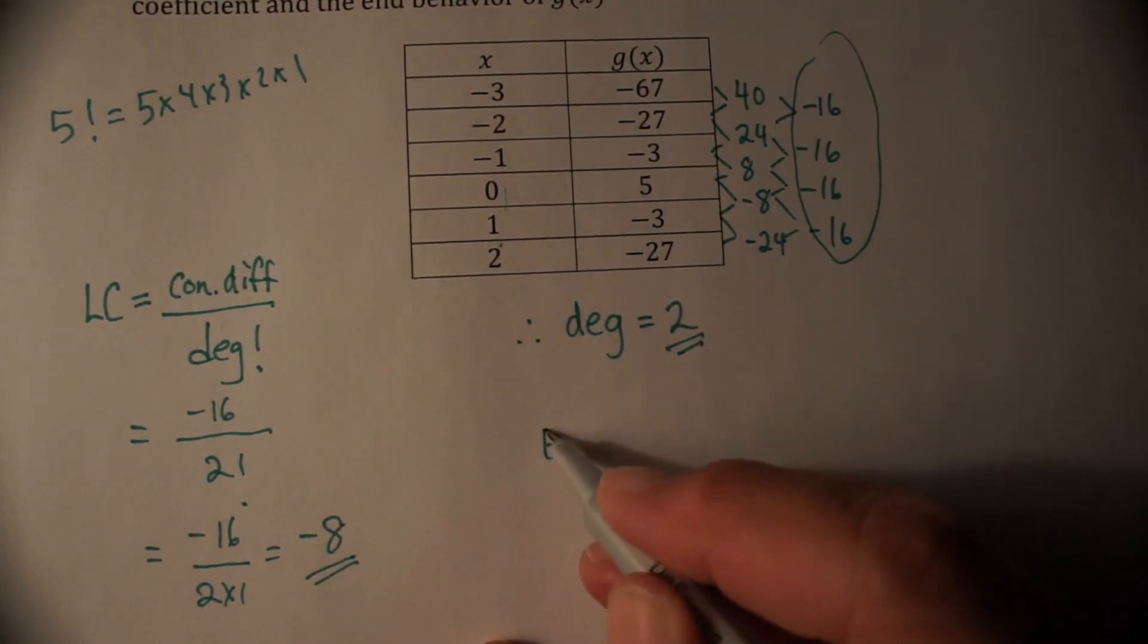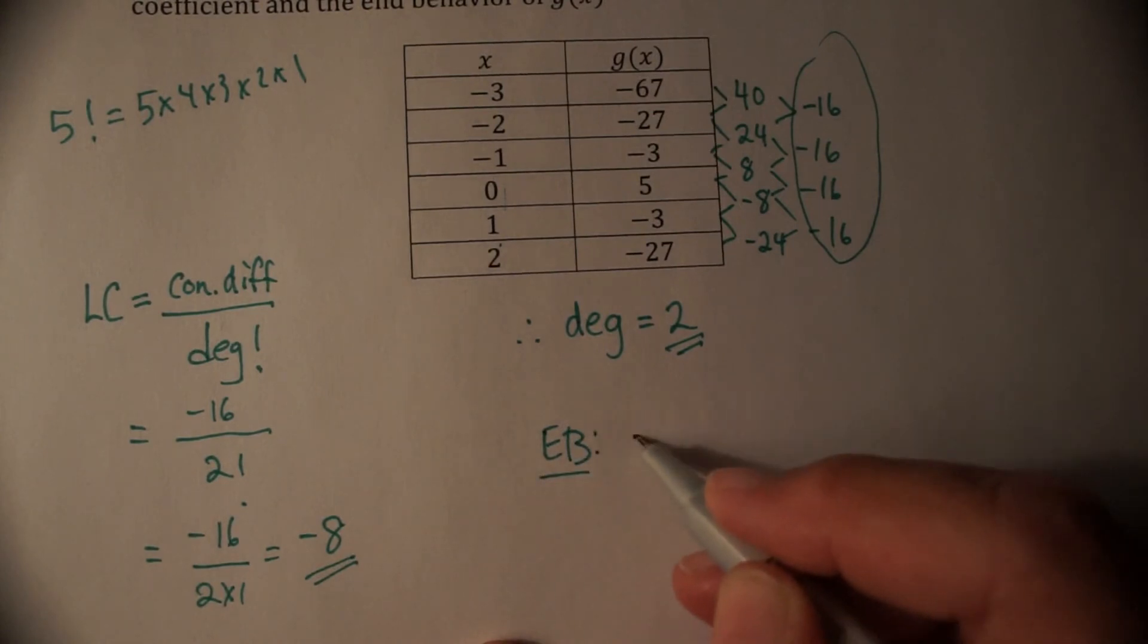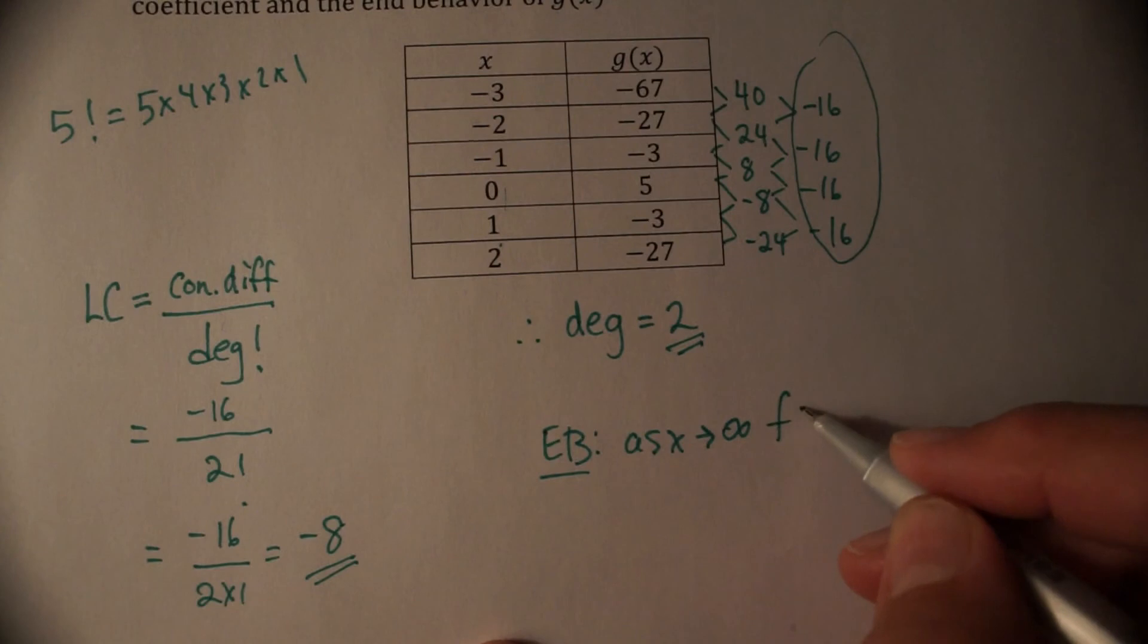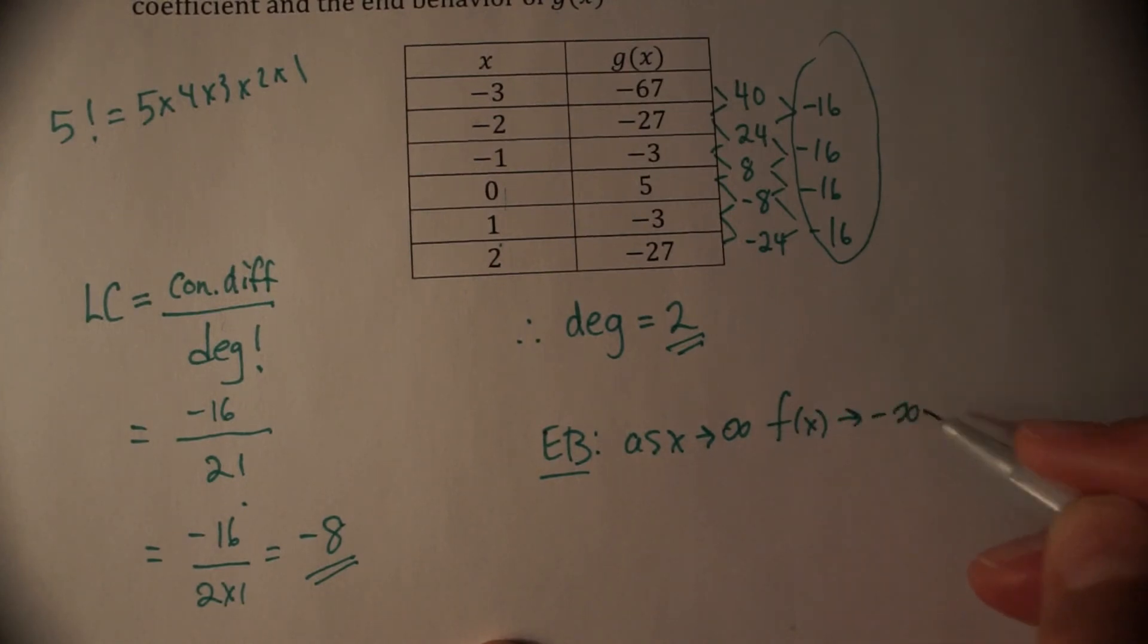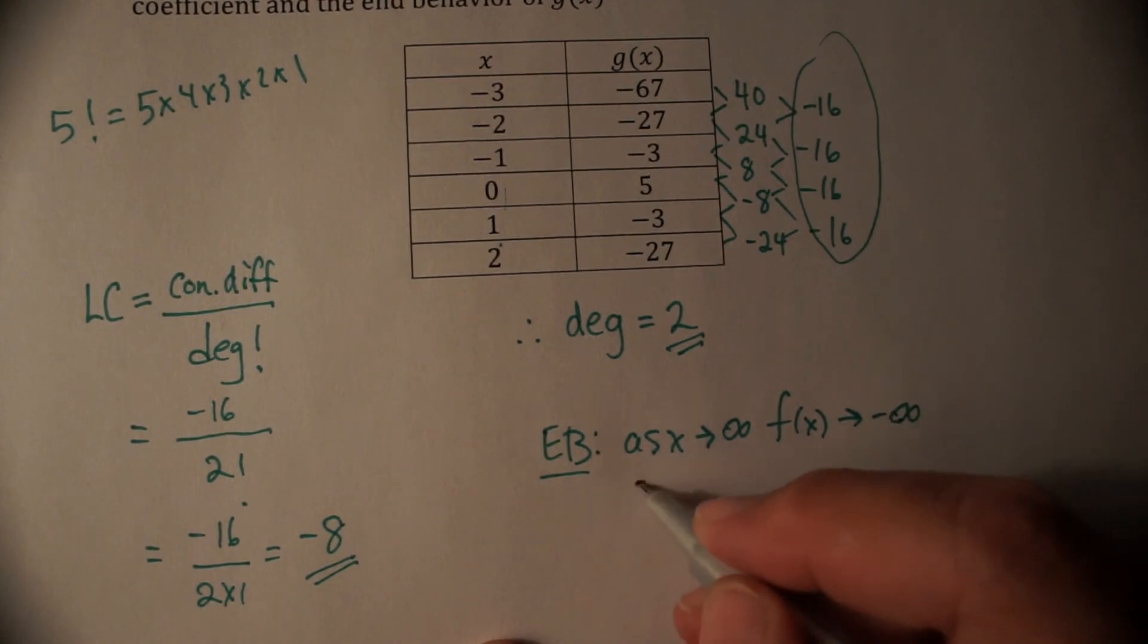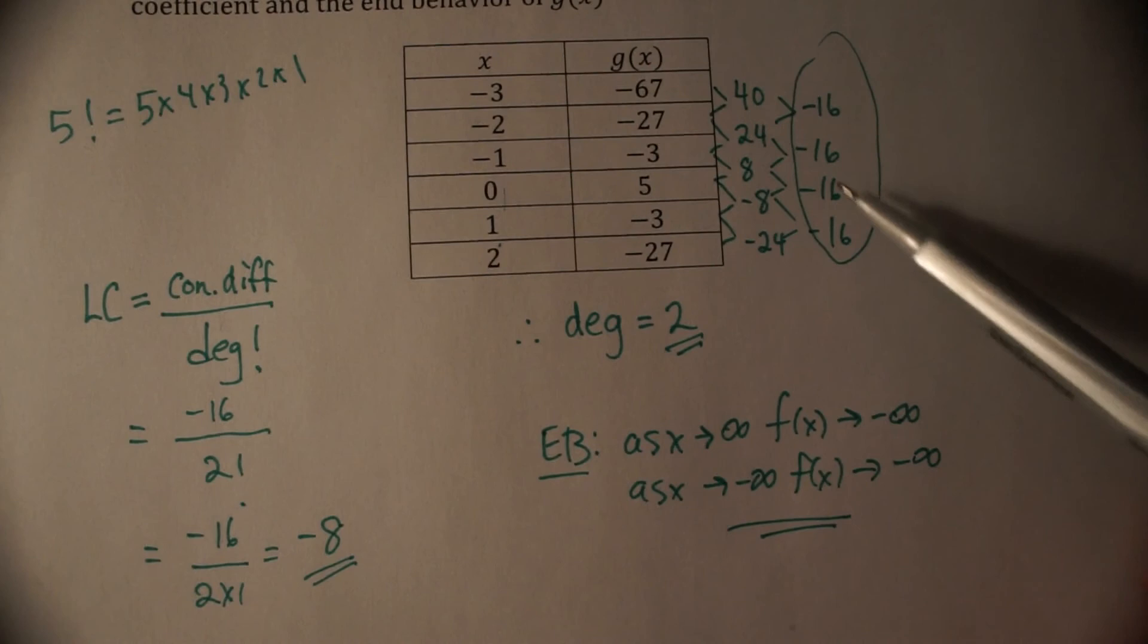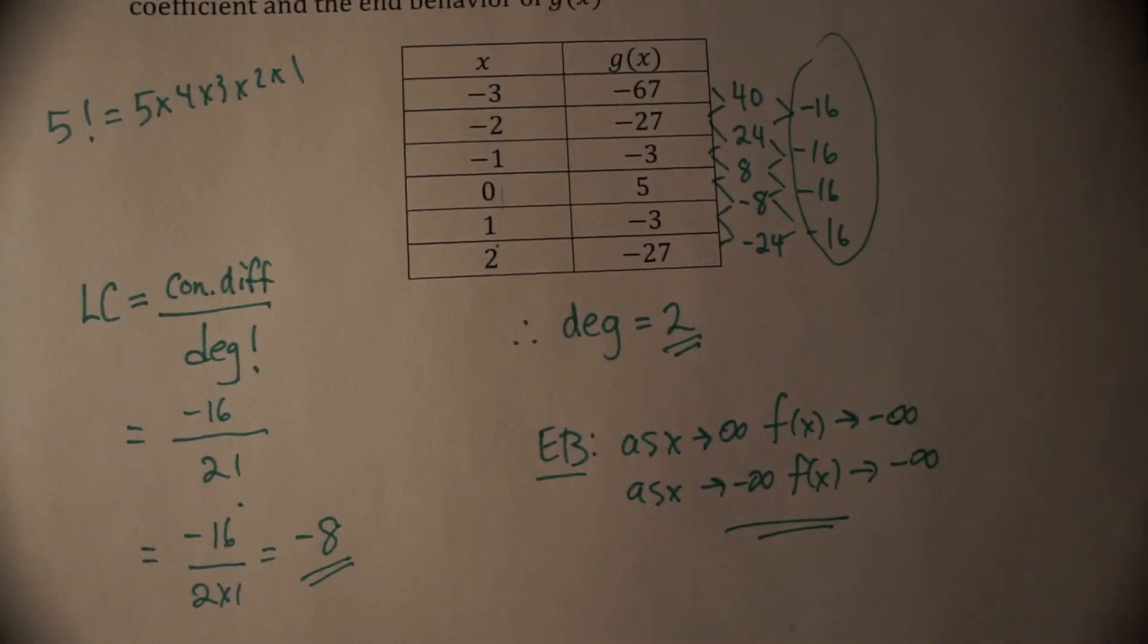So we would say end behavior as x approaches infinity, f of x will be going down, so it will be approaching negative infinity. And as x approaches negative infinity, it will still be going down. f of x will be approaching negative infinity. So that's how we can use these differences to find out about end behavior and degree.